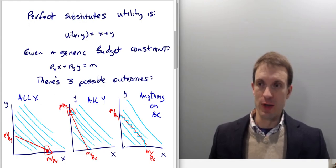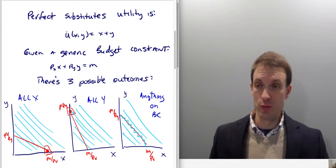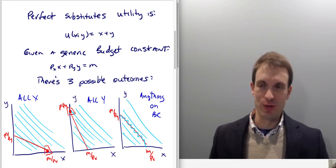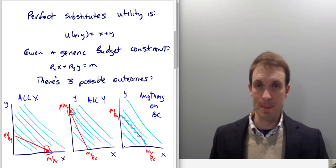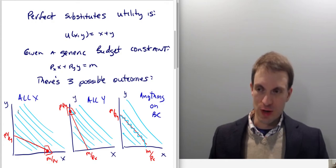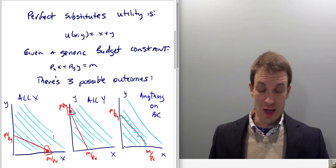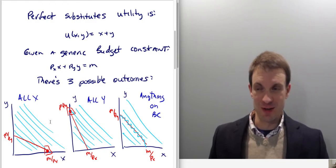In absolute value the MRS is one. The slope of the indifference curve is just the ratio of the marginal utility of X to the marginal utility of Y. The marginal utility of X is the partial derivative of the utility function with respect to X — it's one — and the marginal utility of Y is the partial derivative with respect to Y — also one. So the marginal rate of substitution is one over one, which is one. Our indifference curves are going to be downward-sloping straight lines with a slope of minus one.